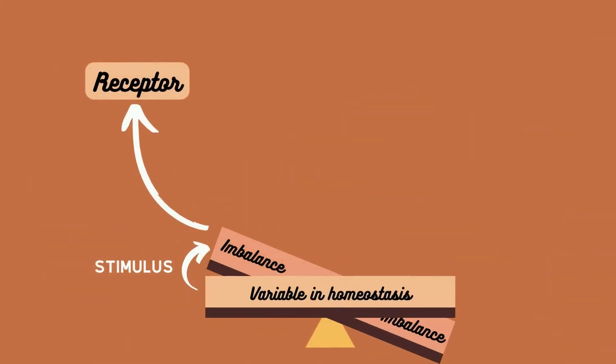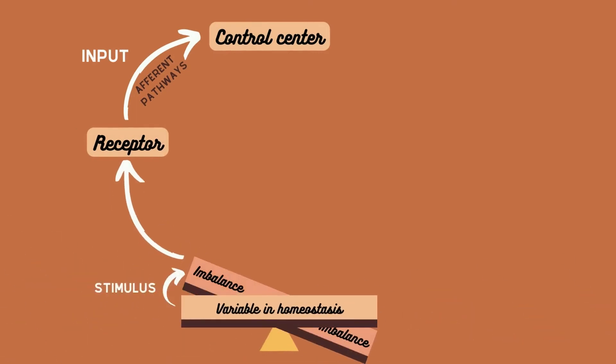As we know, the body communicates through neural or hormonal control systems, so this change is going to be detected by a receptor like the pain receptors in the skin. Then the receptor will send information to a control system like the brain via afferent pathways. We call this an input.